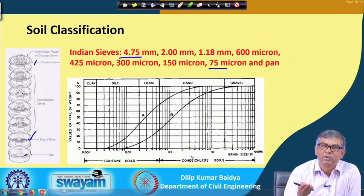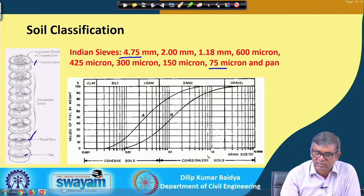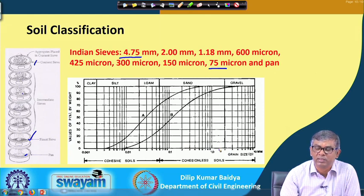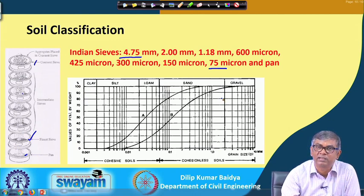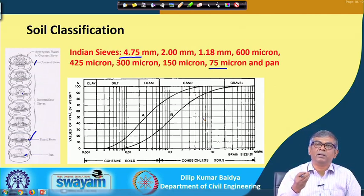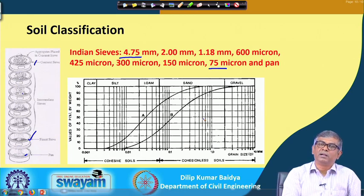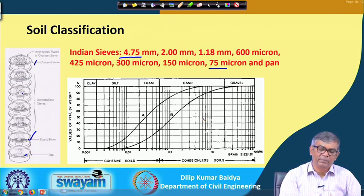For a particular sieve of 2 mm, if cumulative percent retained is 20 percent, then percent finer is 80 percent. Corresponding to each sieve size and its percent finer, those points are plotted on a semi-log paper and then joined to get a curve. From that grain size distribution curve, we can determine what size of particles and in what quantity they are present in the particular soil mass.